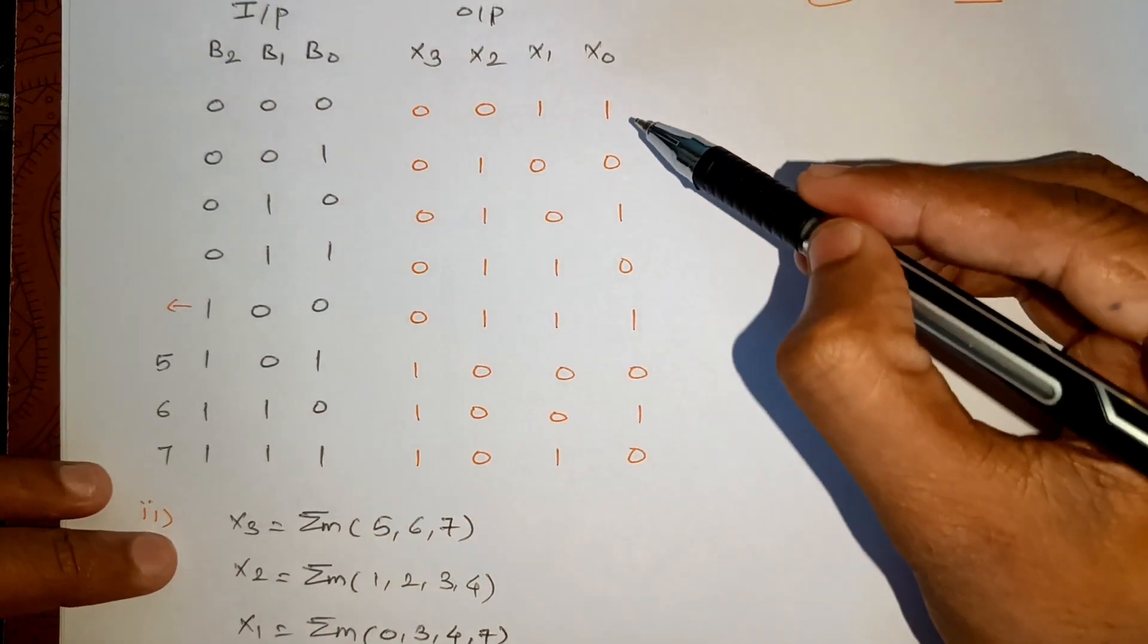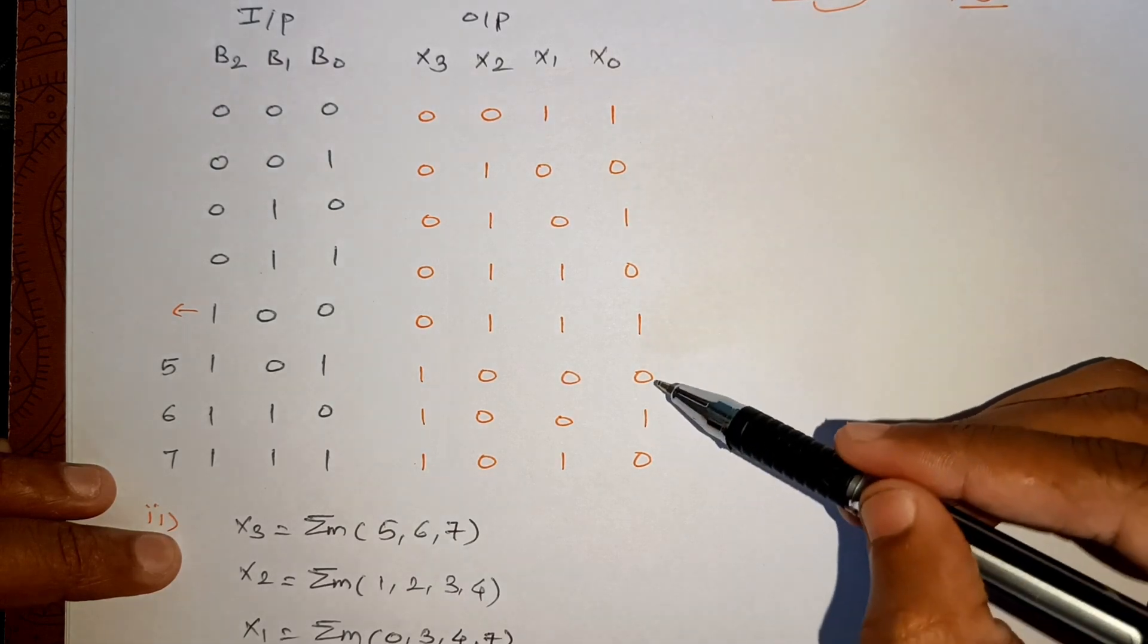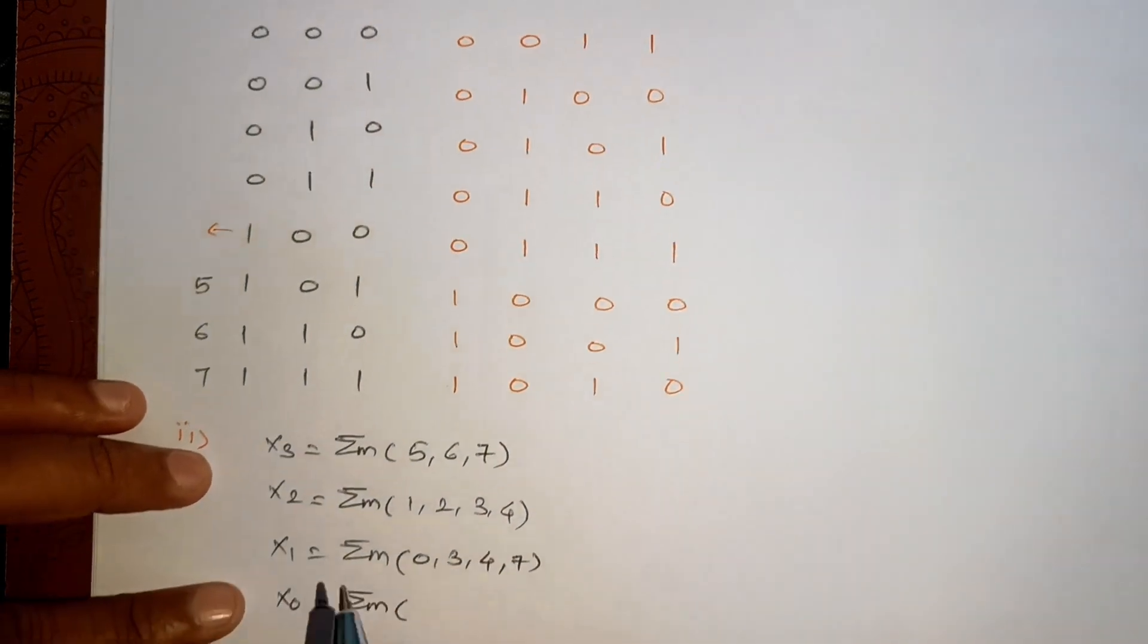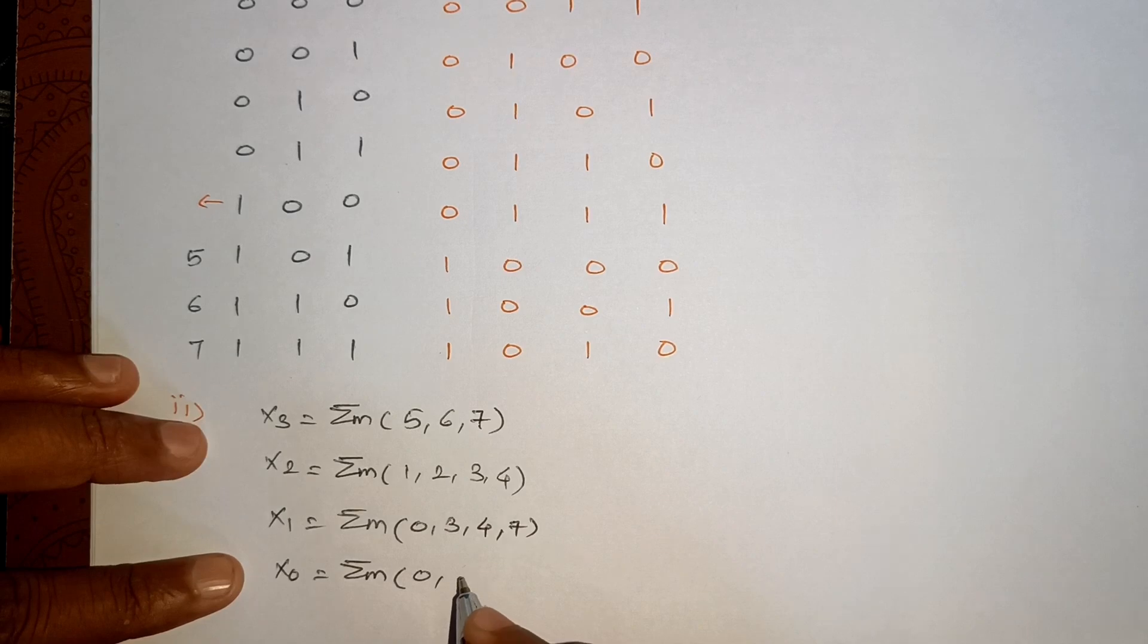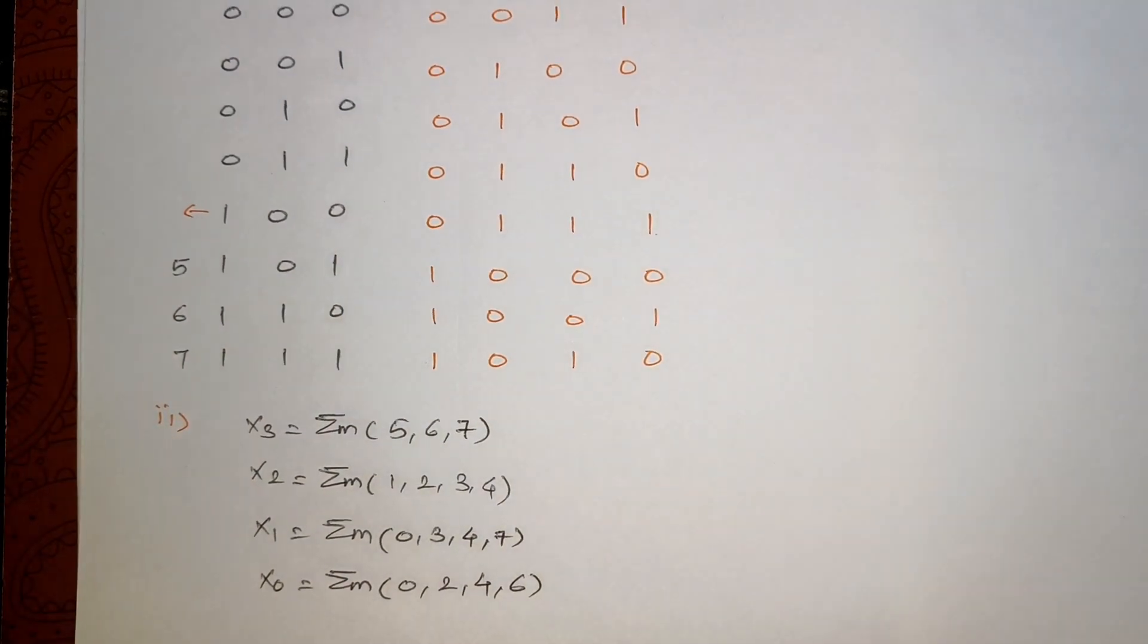And finally we will write it for X0, which is high for alternate: 0, 2, 4, and 6. So we will be writing 0, 2, 4, and the last one is 6.